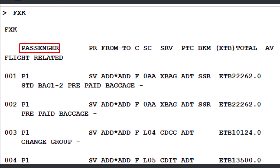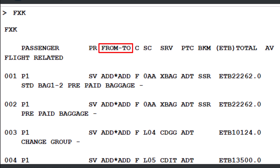Let's explore the columns in the FXK display. In the passenger column, it shows the passenger reference number — for example, P1 for passenger 1. The two-character airline code column shows the airline offering the service, in this case Saudi Airlines. For flight connections, an asterisk appears between the board-on and off points — for example, ADD asterisk ADD indicates a connection in Addis Ababa.